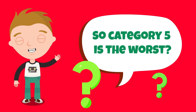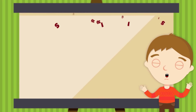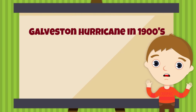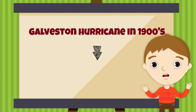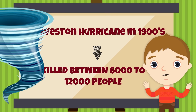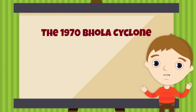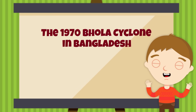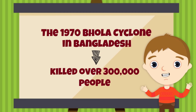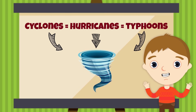So category 5 is the worst? Yes, definitely. One of the worst hurricanes in history was the Galveston hurricane in the 1900s. This devastated the city and killed between 6,000 and 12,000 people, mostly from drowning. The 1970 Bhola cyclone that struck Bangladesh killed over 300,000 people. Cyclones, hurricanes and typhoons are just different names for the same thing.